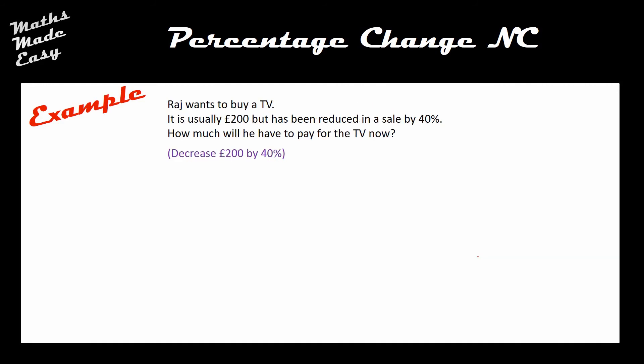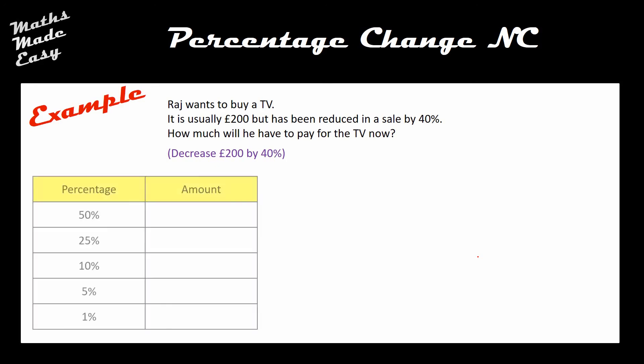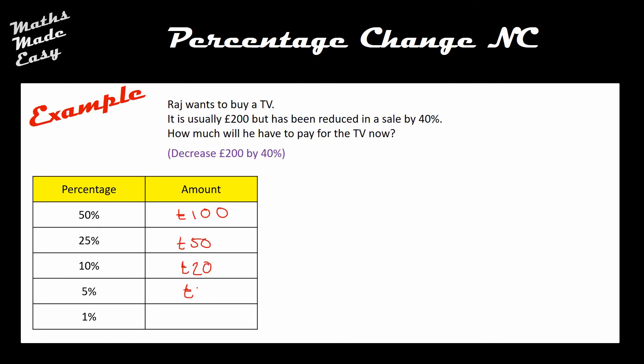In this example, Raj wants to buy a TV. The TV usually costs £200 but it's been reduced in a sale by 40% — we need to find how much the TV costs now. I've written in purple what this looks like as a standard maths question. Because I've kept it at £200, the key percentages are going to be the same as before, so I'll use those same five values.